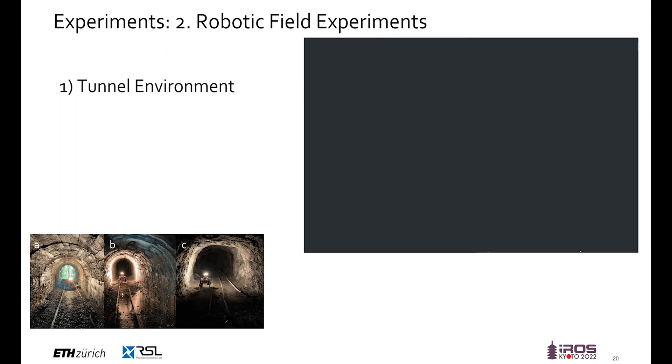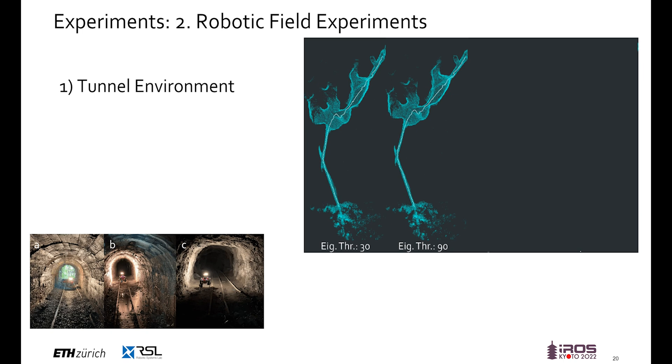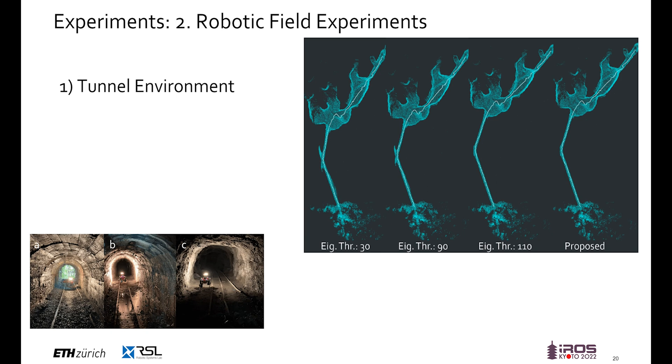We first run an evaluation in the subterranean tunnel environment. When evaluating the eigenvalue-based localizability detection, the default minimum eigenvalue of 30 is not sufficient to stabilize the result. Also, increasing the threshold even further to 90 does not mitigate the problem, until reaching a value of 110. The proposed learning solution works out of the box for this approach and detects the non-localizability reliably.